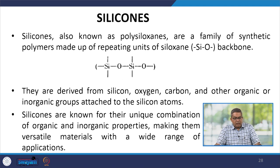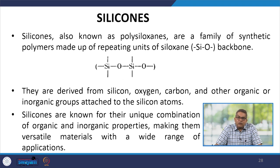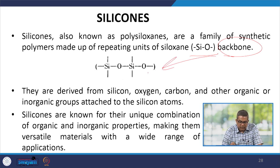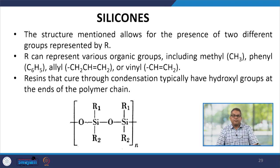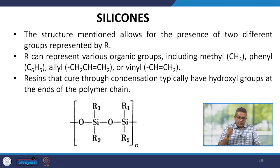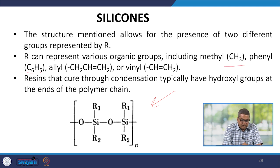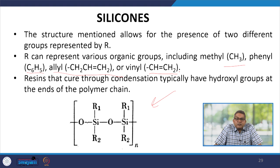Silicones, also known as polysiloxanes, are a family of synthetic polymers made up of repeating units of a siloxane Si-O backbone, derived from silicon, oxygen, carbon and other organic or inorganic groups attached to the silicon atom. Silicones are known for their unique combination of organic and inorganic properties, making them versatile materials with a wide range of applications. The structure allows for two different groups represented by R, which can be methyl, phenyl, ethyl (C₂H₆), allyl (C₂H₂), CH₂=CH₂, and adrobenyl groups. Resins that cure through condensation typically have a hydroxyl group at the end of the polymer chain.